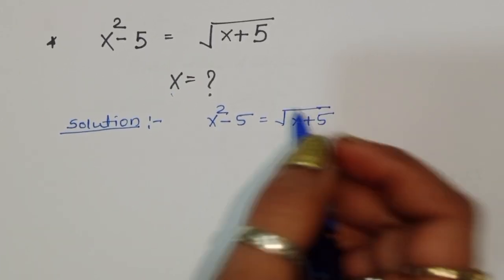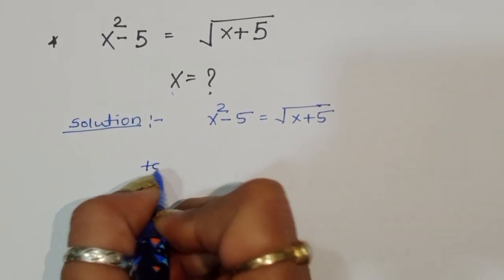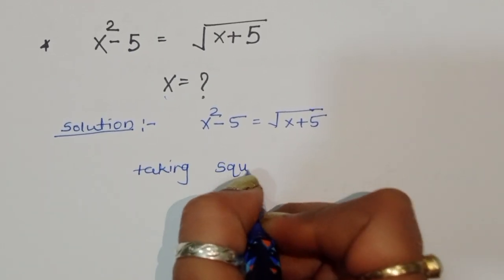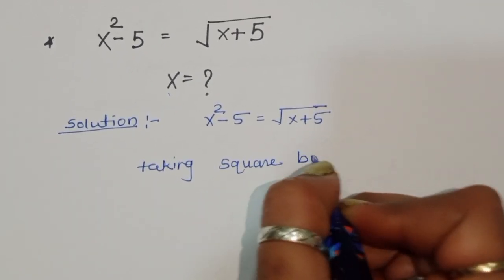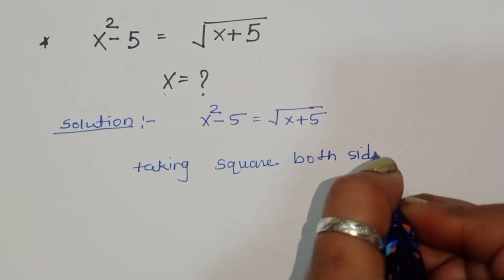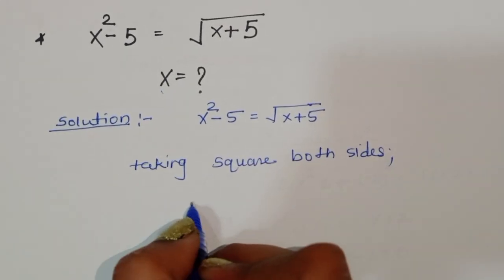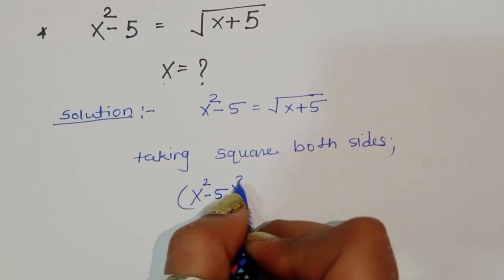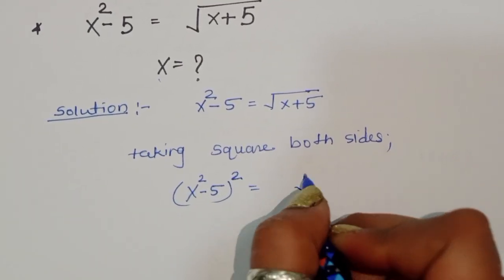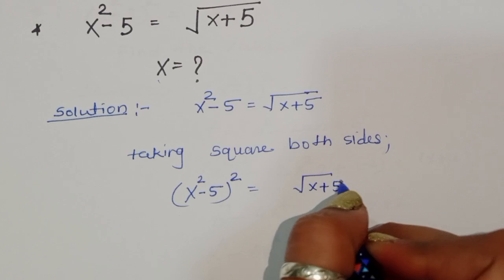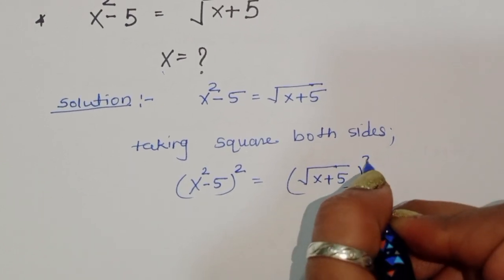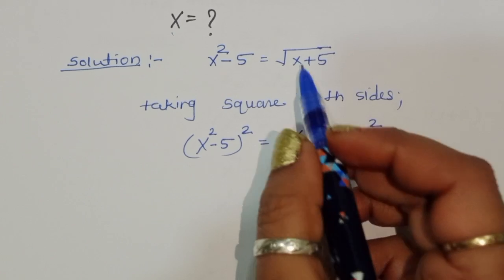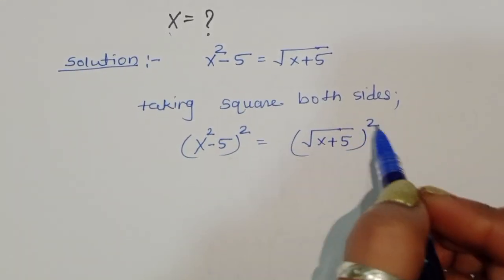We take the square on both sides. Then we get (x² - 5)² = (√(x + 5))², because we have to remove the square root — that's why we are taking the square.